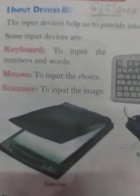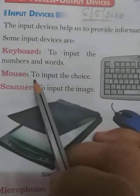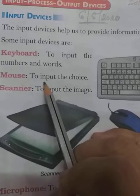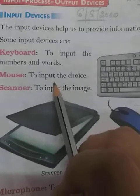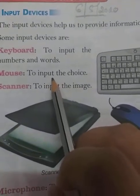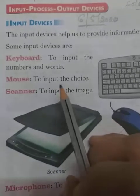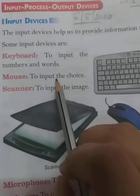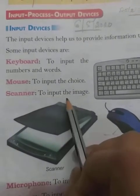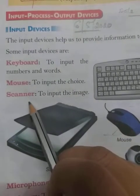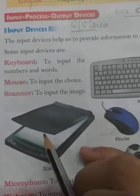Next is the mouse, used to input choices. With the help of the mouse, we can choose icons or different pictures on the computer. We can select pictures and objects on screen using the mouse.